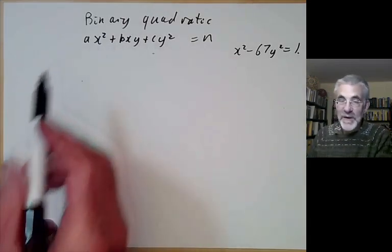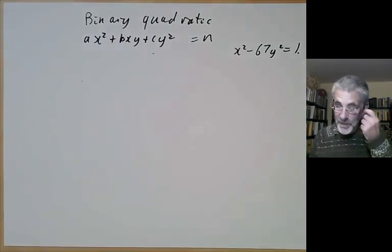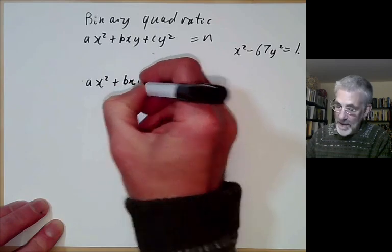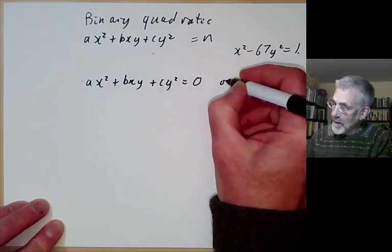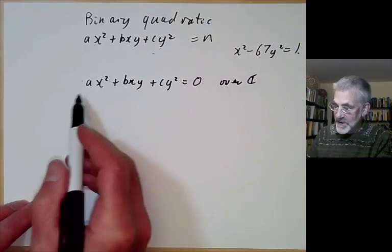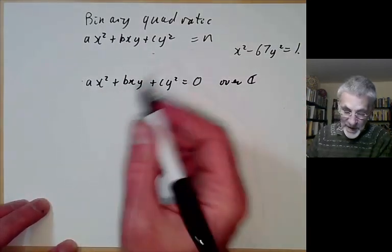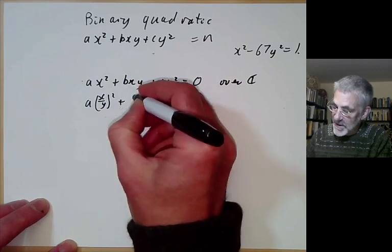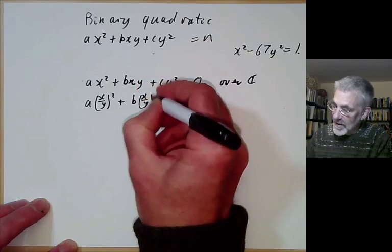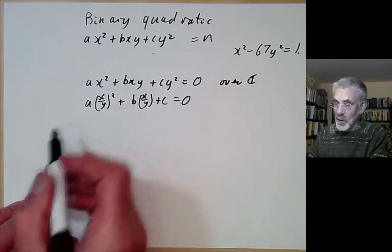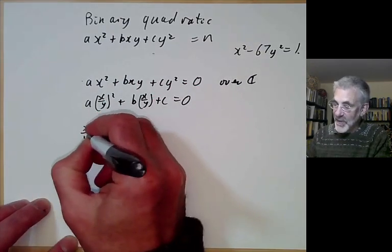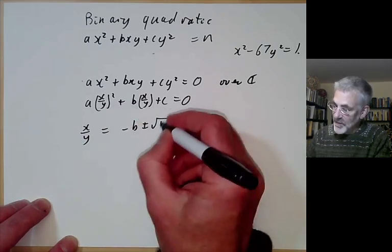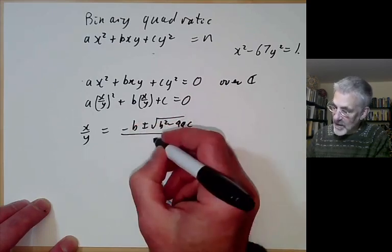Before solving it over the integers, we should first recall what happens over the complex numbers. We solve ax squared plus bxy plus cy squared equals zero over the complex numbers, wanting a solution with x and y non-zero. Dividing by y squared, we get ax over y squared plus bx over y plus c equals zero — a quadratic equation we solve by completing the square, giving x over y equals minus b plus or minus the square root of b squared minus 4ac, over 2a.